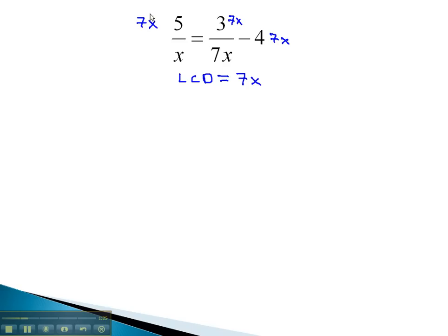When we do this, we can go through and divide out the x from the first fraction, the 7 and the x from the next fraction, and what we're left with is 7 times 5, or 35, equals 3, minus 4 times 7x, which is 28x.